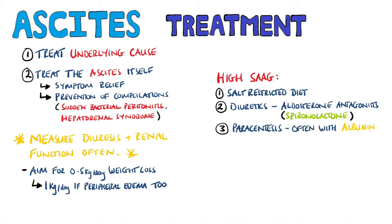This is why albumin is often infused at the same time. Surgery is usually the last resort, ranging from a transjugular intrahepatic portosystemic shunt — known as TIPS — all the way to a liver transplant.